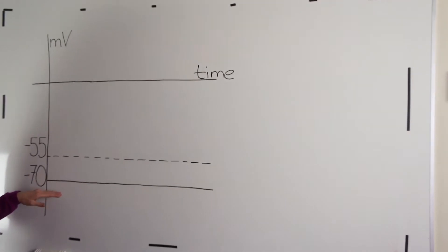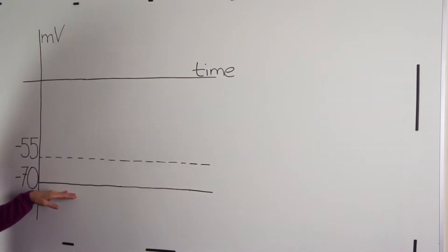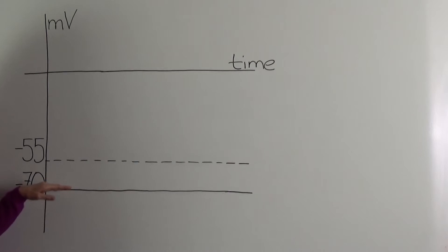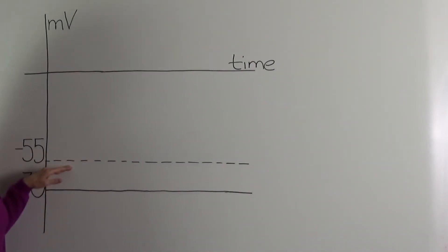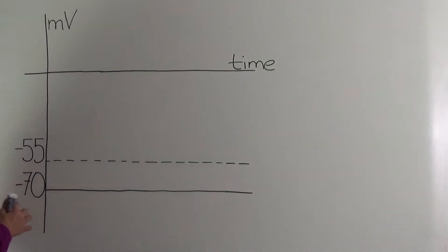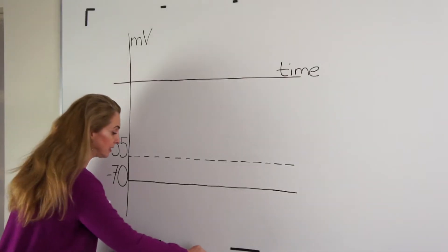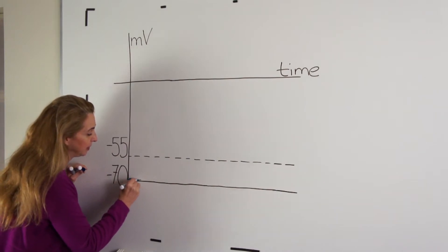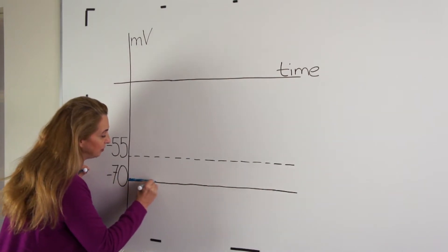Every cell has a resting membrane potential. In our example, this cell has a resting membrane potential of minus 70 millivolts. Every cell has a different threshold where voltage-gated sodium and potassium channels open. In our cell, this is about minus 55 millivolts. The cell is at rest for some time at the resting membrane potential level.